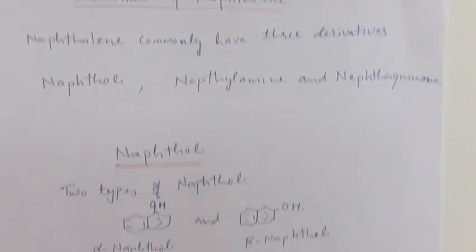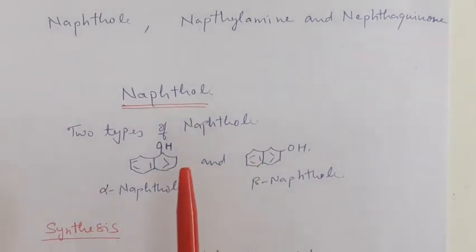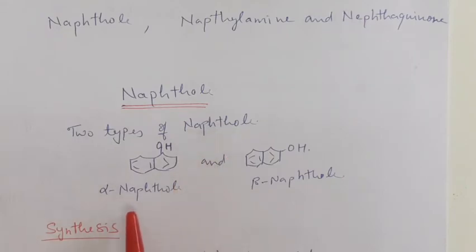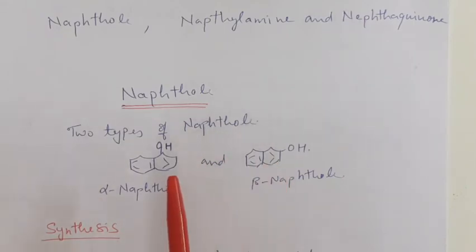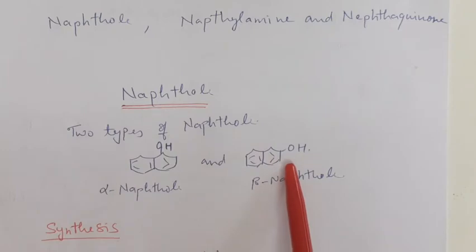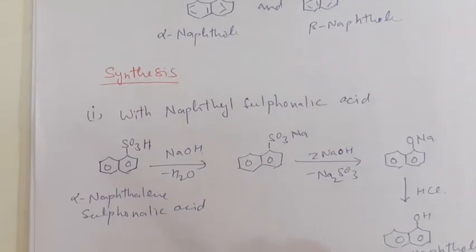Naphthol is the compound in which an OH group is attached on a naphthalene ring. Naphthol is of two types: alpha naphthol and beta naphthol. In alpha naphthol, the OH group is attached at the one carbon atom, and in beta naphthol, the OH group is attached at the two carbon atom.